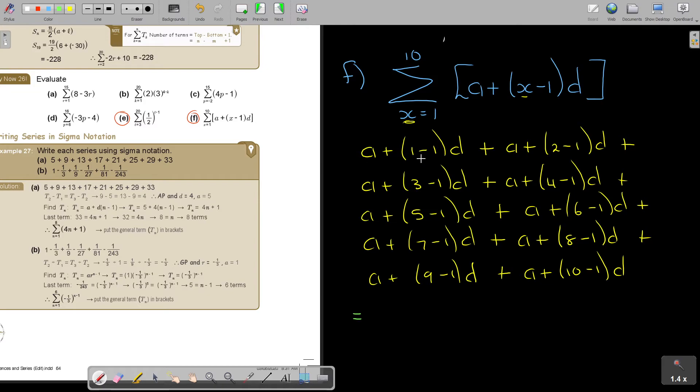Let me just simplify. 1 minus 1, so it's 0. So it will just be A. That will be A plus D. That will be A plus 2D. Plus A plus 3D. Plus A plus 4D. Plus A plus 5D. Plus, and there, A plus 6D. Plus A plus 7D. Plus A plus 8D. And the last one, plus A plus 9D.